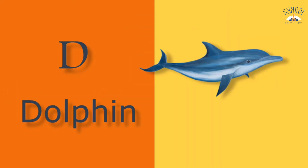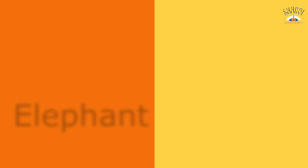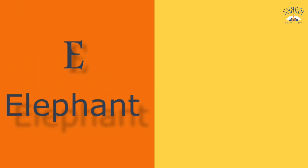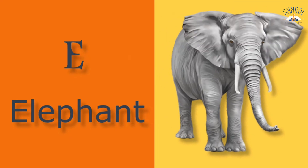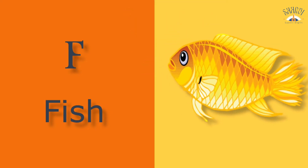D for dolphin. Dolphin means dolphin. E for elephant. Elephant means hathi. F for fish. Fish means machli.